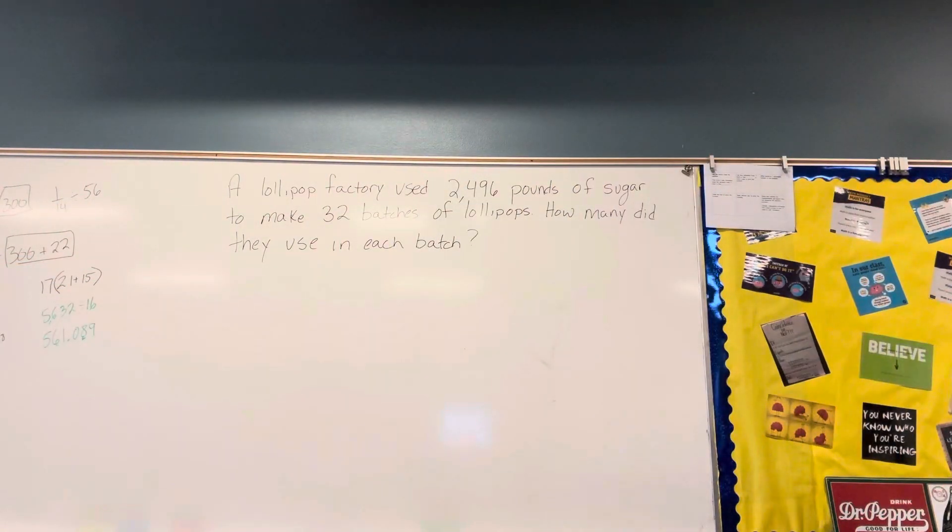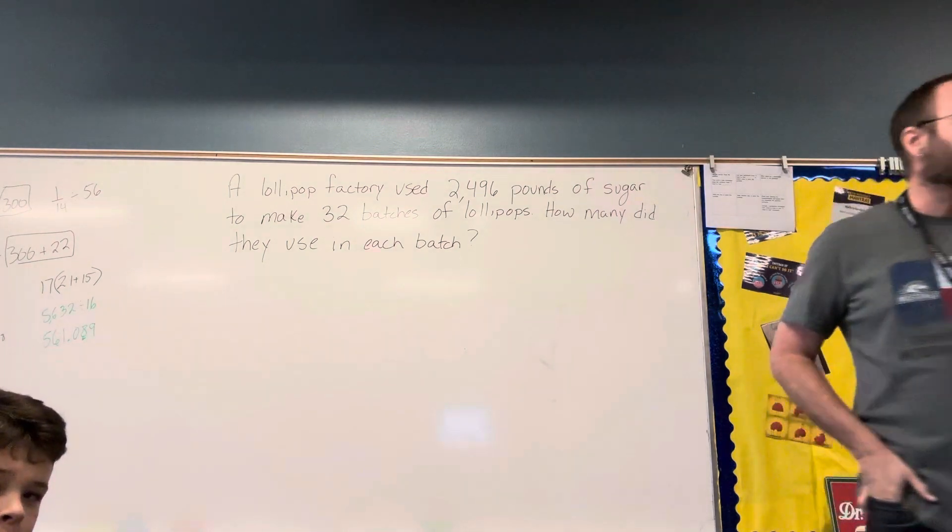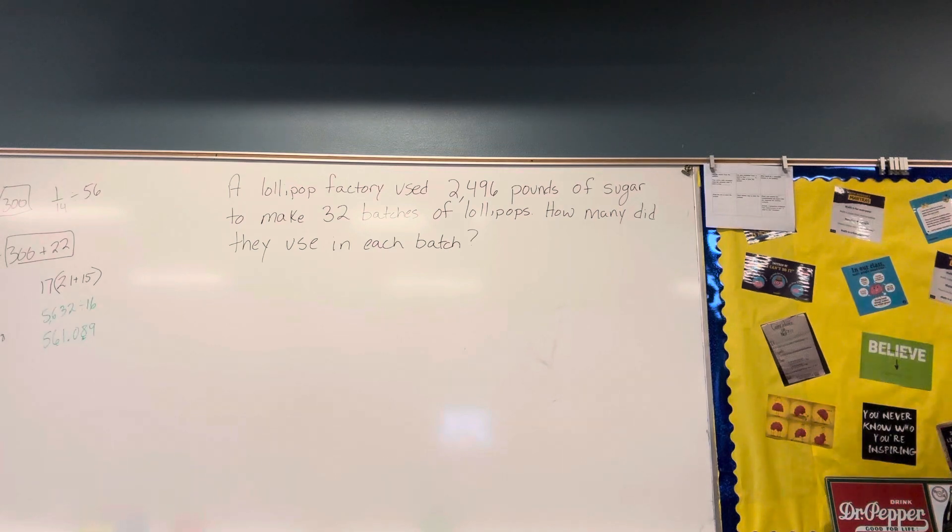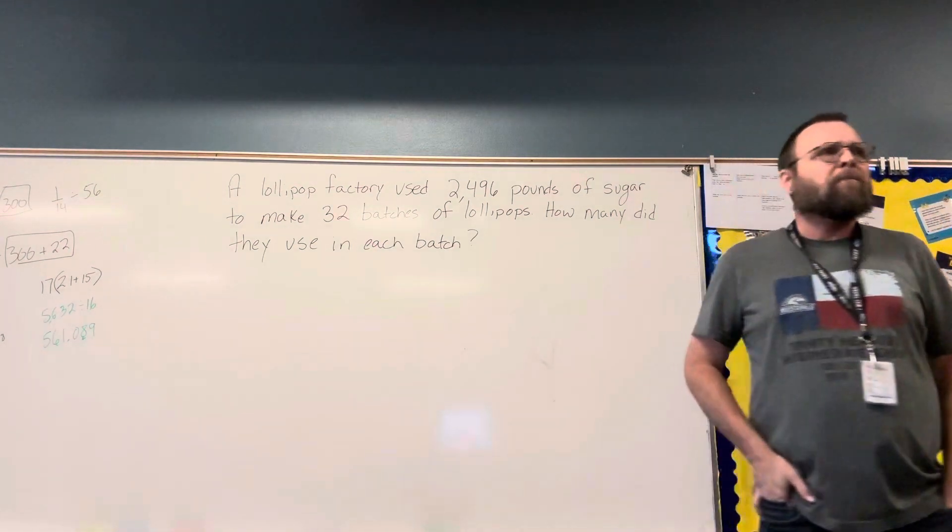A lollipop factory used 2,496 pounds of sugar to make 32 batches of lollipops. How many pounds did they use in each batch?